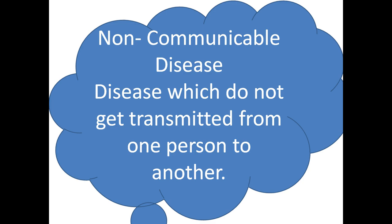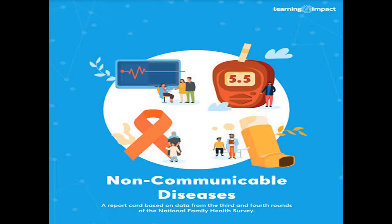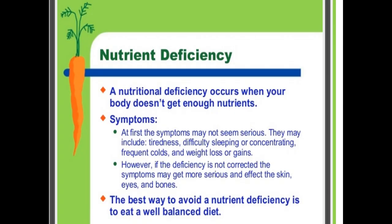While some diseases may be present at birth, a number of them are caused due to the deficiency of particular nutrients such as proteins, carbohydrates, vitamins, and minerals in our diet. Diseases caused due to deficiency in our diet are known as deficiency diseases. Deficiency diseases are also known as nutrient deficiency diseases.